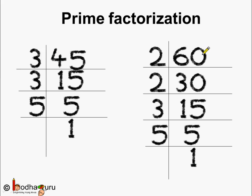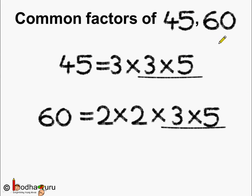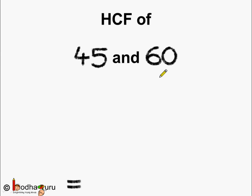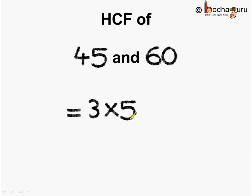Now we have done the prime factorization of both 45 and 60. 45 = 3 × 3 × 5, and 60 = 2 × 2 × 3 × 5. What are the common factors of 45 and 60? They are 3 and 5. To get the HCF, we multiply the common factors: 3 × 5 = 15. So the HCF of 45 and 60 is 15, found using the prime factorization method.